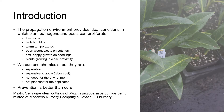The propagation environment provides ideal conditions in which many plant pathogens and pests can proliferate. We frequently have free water, high humidity, warm temperatures, open wounds or cuts on cuttings, grafts and divisions, and soft sappy growth on young plants that's easy for pathogens or the piercing or sucking mouth parts of insects to penetrate. And we've got plants growing in close proximity. Pests, pathogens, algae, mosses and liverworts can all have an absolute field day in this kind of environment.